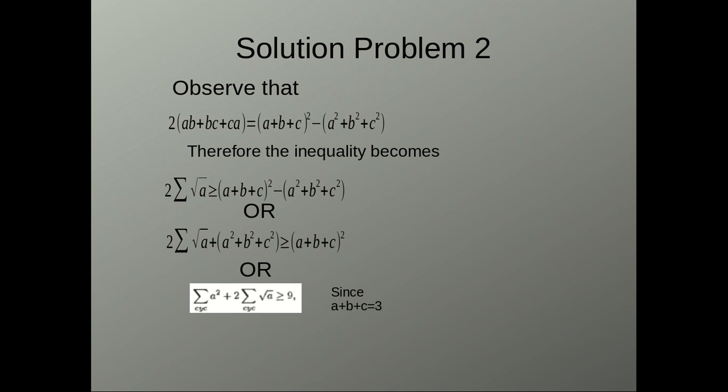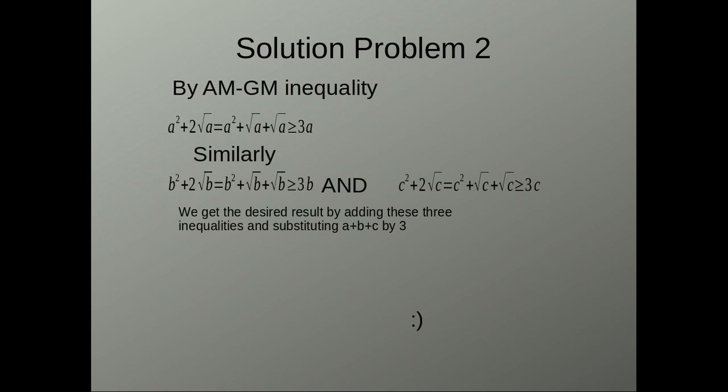This proof is quite simple and just uses AM-GM inequality on three variables. Here we have A square plus 2 root A is greater than or equal to 3A because A square plus root A plus root A is greater than or equal to 3A by simple AM-GM on these three terms.